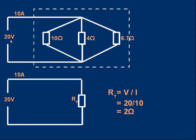These resistors are connected to a 20-volt supply, allowing 10 amps to flow before the current splits up and recombines. I've drawn a dotted box around the three resistors in parallel. The question is: what is the total resistance of the three resistors in parallel? That means what single resistor could replace those three in parallel and still produce the same 10-amp current? If we apply 20 volts to a single resistor RT, we want it to also allow 10 amps to flow.